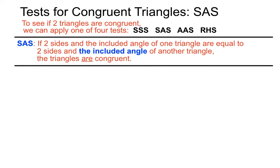SAS states that if two sides and the included angle of one triangle are equal to two sides and the included angle of another triangle, then the triangles are congruent. We'll see this best in our example here.